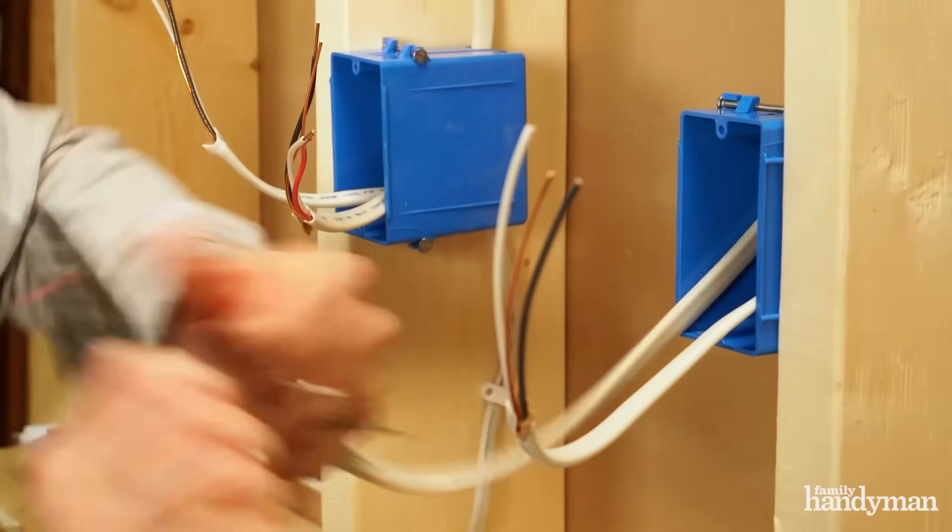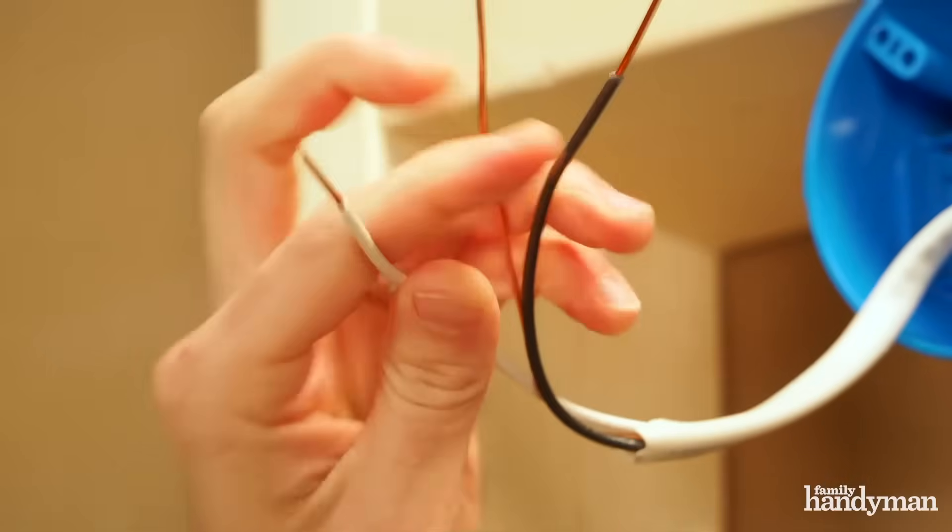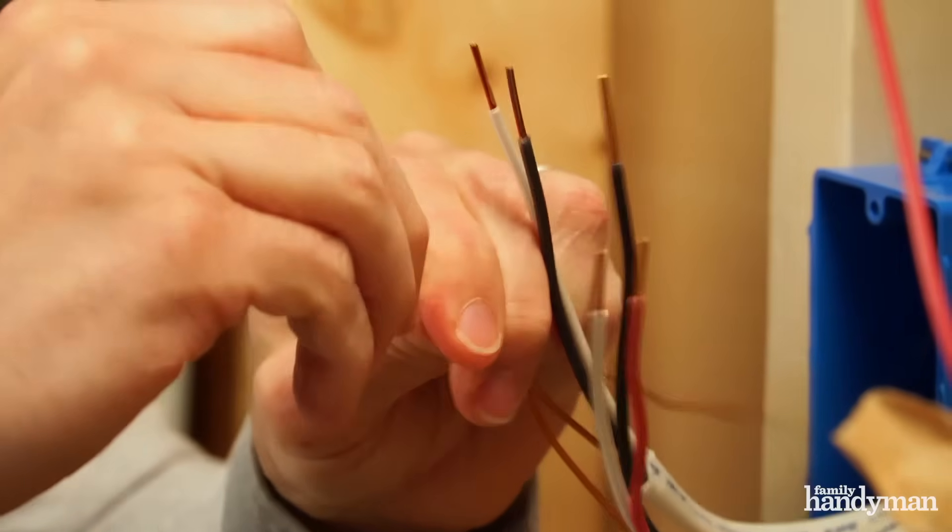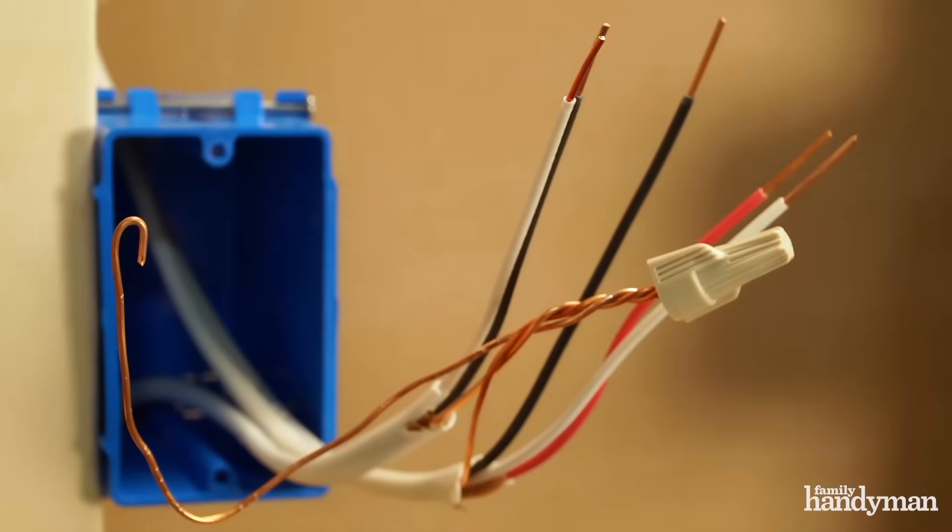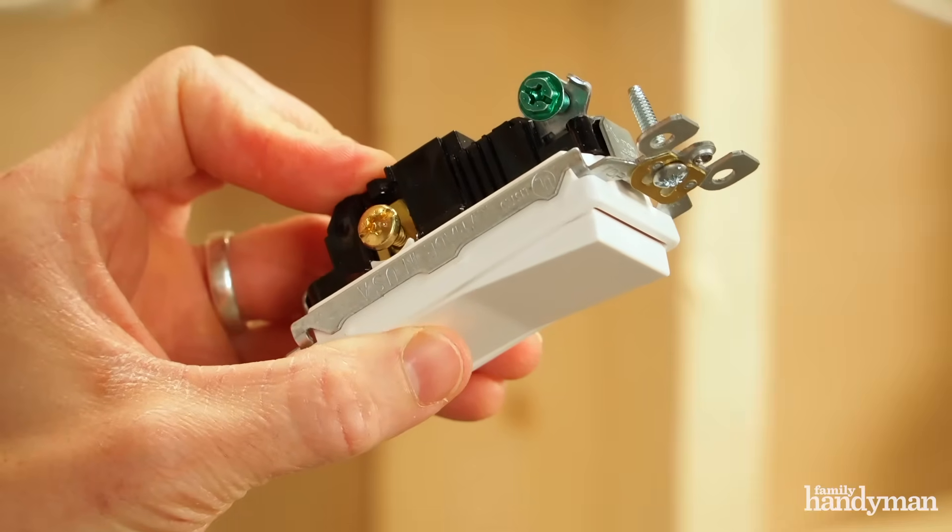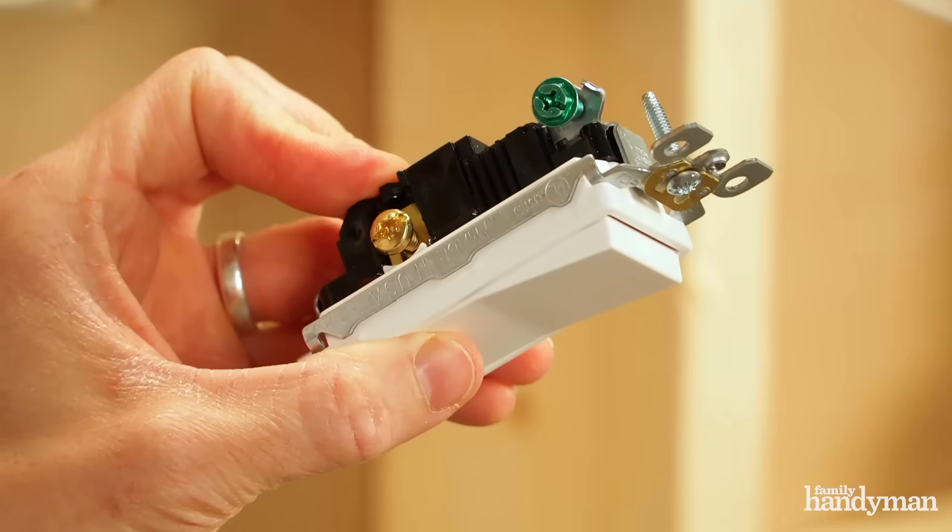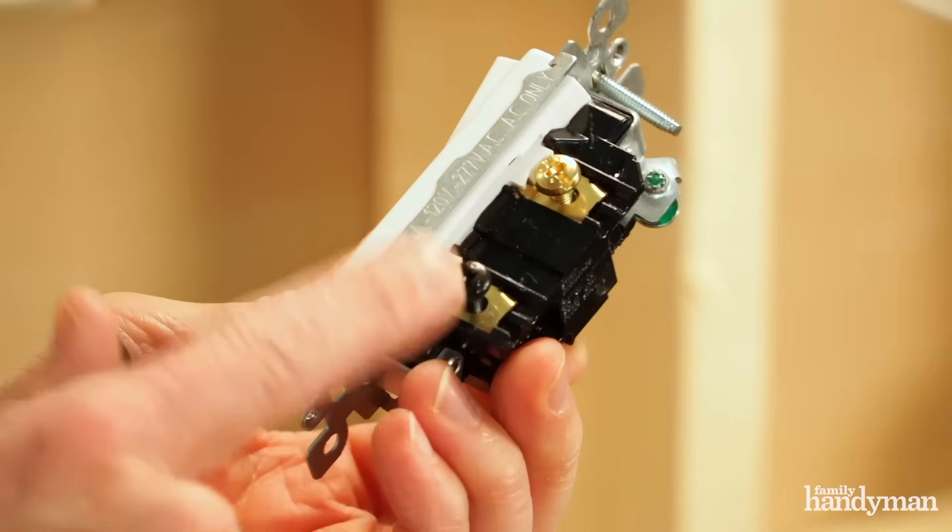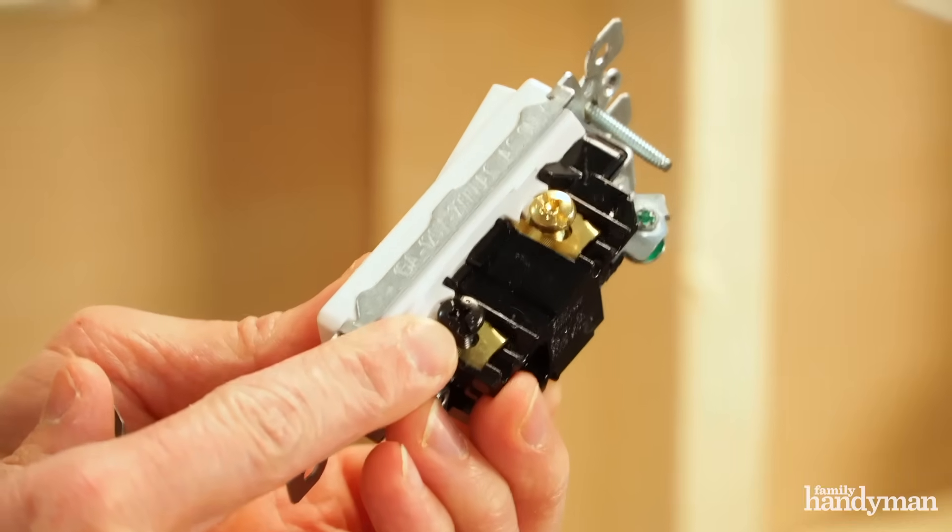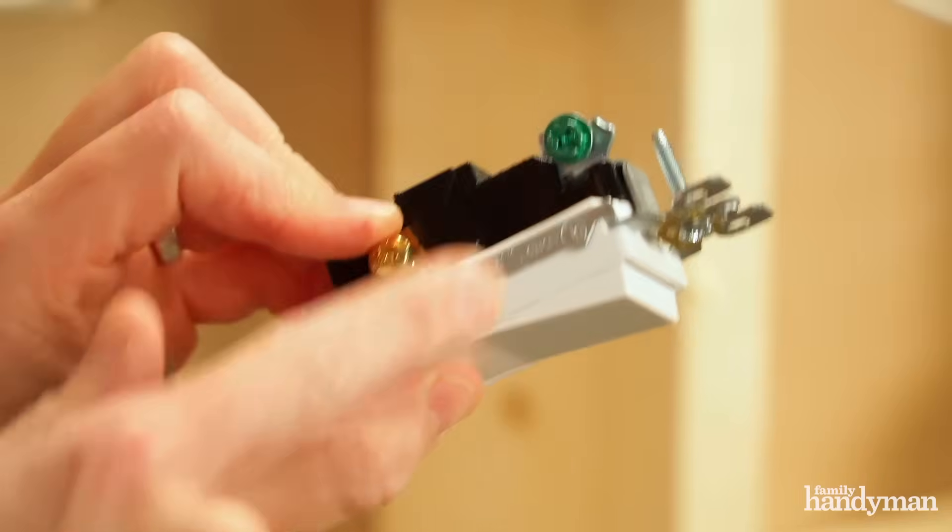First strip all the wires that you're going to be working with. Next attach all the ground wires in the first switch. Now a three-way switch is a little bit different than a single pole switch in that it's got an extra terminal called the common terminal. We'll get to that in a second but first we want to connect the ground.